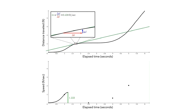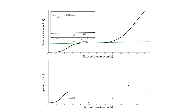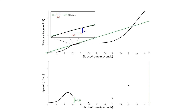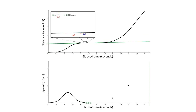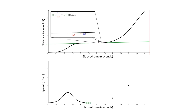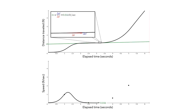As we continue to move along the time axis, for each tiny delta t, the change in distance becomes less and less. Thus, the slope of the secant line is decreasing, and so the value of the derivative function — the speed — is also decreasing up until about 2.25 seconds. As we continue to move along the time axis, for each tiny delta t there is very little change in distance. Thus, the slope of the secant line is a number close to zero, and so the value of the derivative function — the speed — is also close to zero, up until roughly 3.25 seconds.